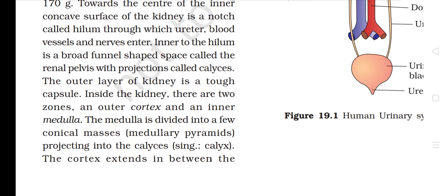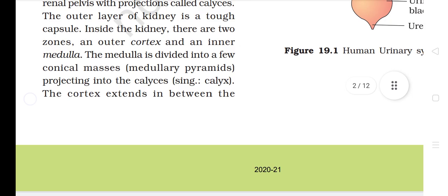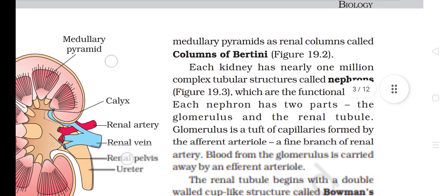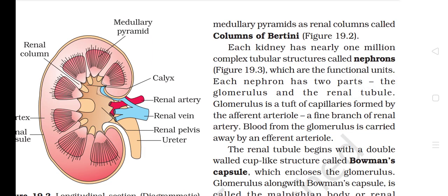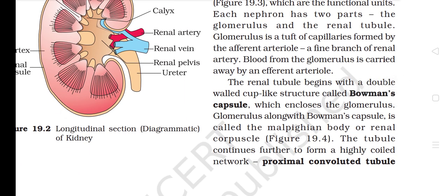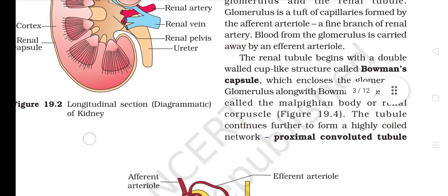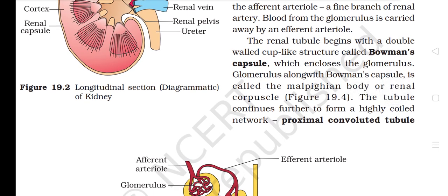Inner to the hilum is a broad funnel-shaped space called the renal pelvis, with projections called calyces. The outer layer of the kidney is a tough capsule. Inside the kidney there are two zones: an outer cortex and an inner medulla. The medulla is divided into a few conical masses called medullary pyramids projecting into the calyces. The cortex extends between the medullary pyramids as renal columns called columns of Bertini. Each kidney has nearly one million complex tubular structures called nephrons, which are the functional units. Each nephron has two parts: the glomerulus and the renal tubule.